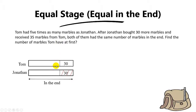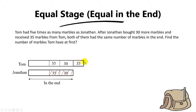Now, Jonathan received 35 marbles from Tom. That means there are 35 marbles here that actually came from Tom. So there'll be 35 here, and because you're working backwards, you have to give this 35 back to Tom — this 35 actually came from Tom. So you shade this part here, and this part over here will shift back to Tom, which is 35 over here.